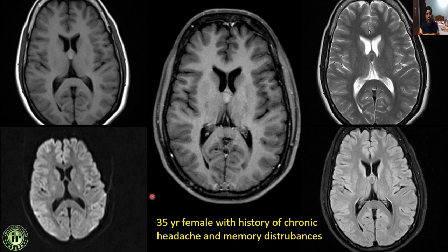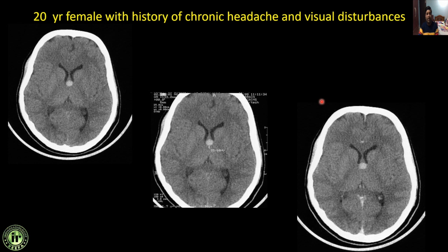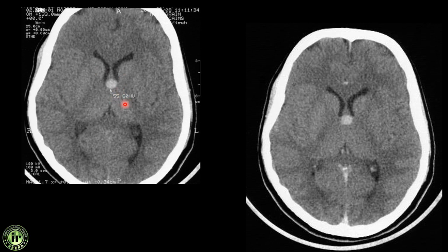Next: a 35-year female with chronic headache and memory disturbances. There is a cystic lesion hyperintense on T1 sitting in the foramen of Monroe, hypointense on T2. On FLAIR, there is a peripheral hyperintense rim with central hypointensity. No restricted diffusion on DWI, and no significant enhancement because the lesion is already hyperintense on T1. This is a classical case of colloid cyst — location and signal characteristics are diagnostic. The CT of another 20-year female shows a hyperdense cystic lesion in the foramen of Monroe with HU approximately 55–60, with no significant enhancement on IV contrast — also a classical colloid cyst.